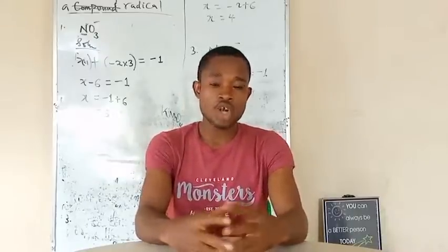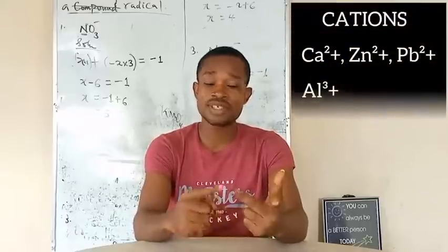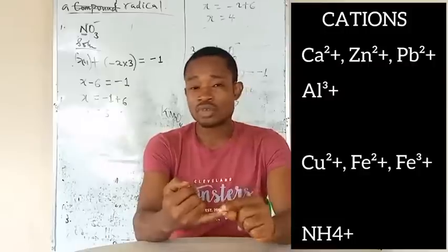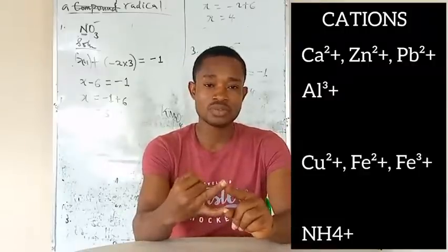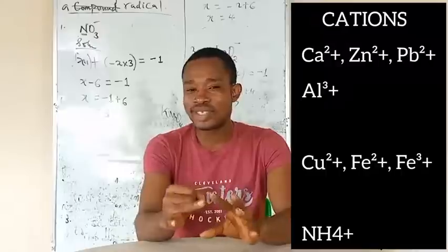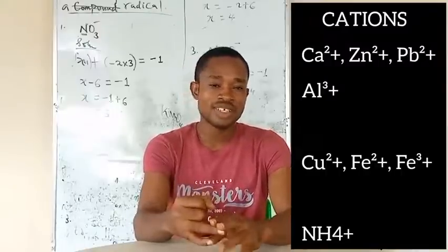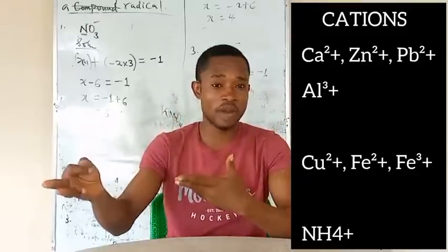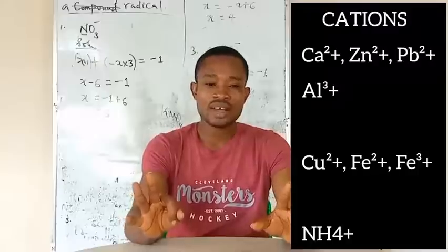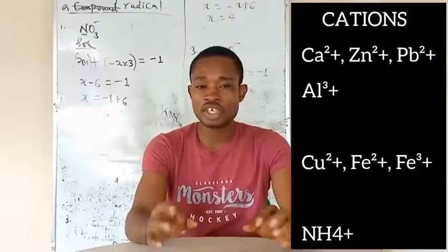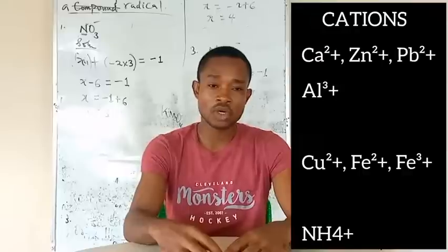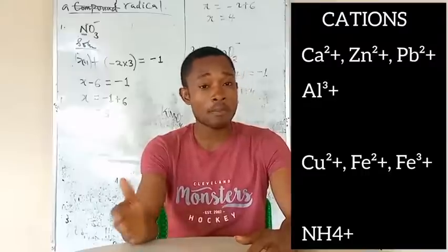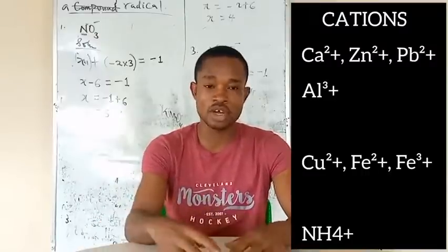A student can be tested on calcium ion, zinc ion, lead ion, aluminium ion, copper(II) ion, iron(II) ion, and iron(III) ion. Then we also have a positive radical — ammonium ion, that is NH₄⁺. These eight cations are what a student should give attention to while preparing for salt analysis tests. Your exact question would be based on one or more of these positive ions.